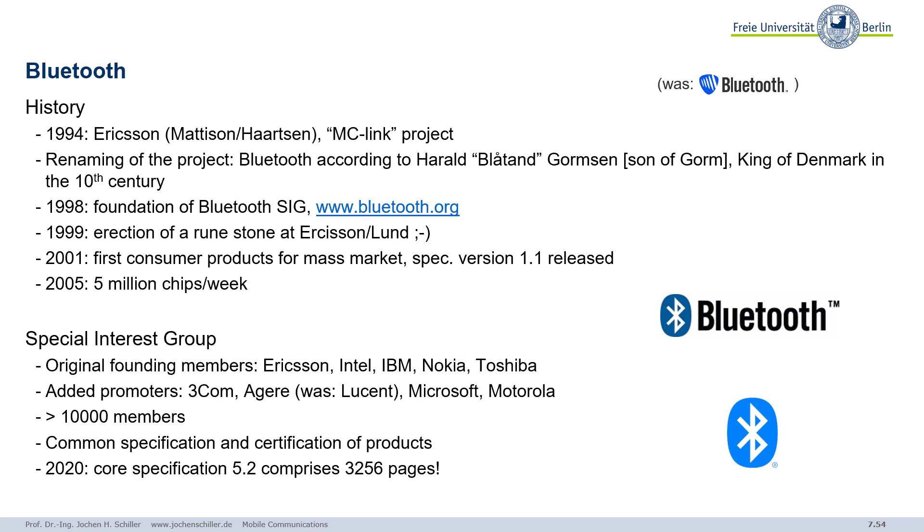This all happened in 1994 at Ericsson when two people — the major drivers — had the so-called MC Link project. During a meeting with friends they came up with a new name: Bluetooth, named after Harald Blotand — the byname of Harald Gormsen, son of Gorm, king of Denmark in the 10th century. The original logo also showed the sails of Viking ships sailing on the open sea.